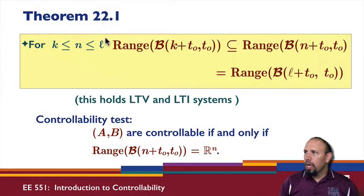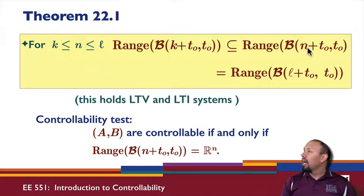So, theorem 22.1 says, for n between k and l. So, k is less than n, n is the order of the system. If my A matrix is n by n, n is the dimension there. k is less than n, or less than or equal, l is greater than or equal to n. And what theorem 22.1 says is that the range of the control map from t0 to k plus t0 is contained within the range of this, the control map up to time n, which is also contained within the range up to time l.